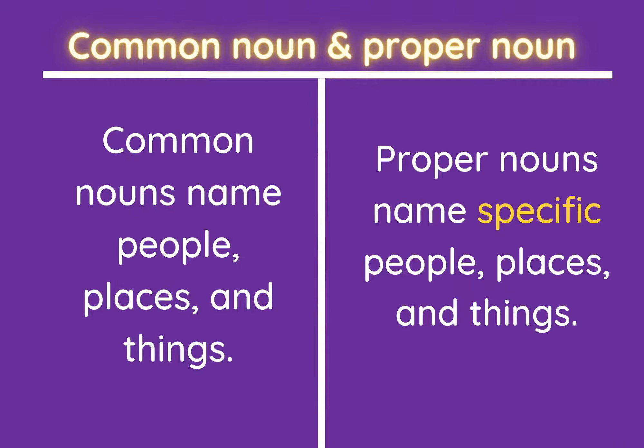Common noun and proper noun. When I speak of a person, place, animal, or things in general — or when I refer to them in common — it is called a common noun. But when I refer to a specific person, place, animal, or thing, it is called a proper noun.